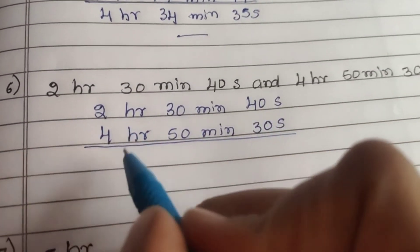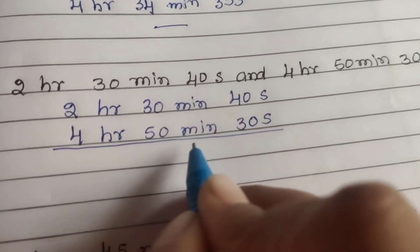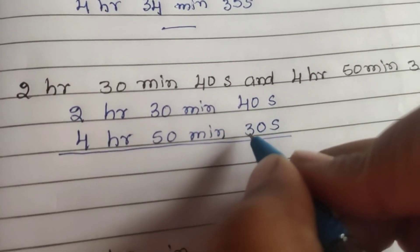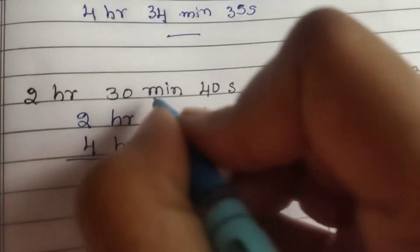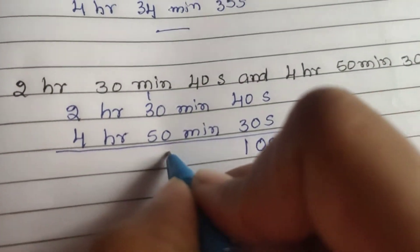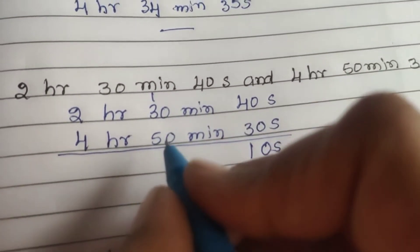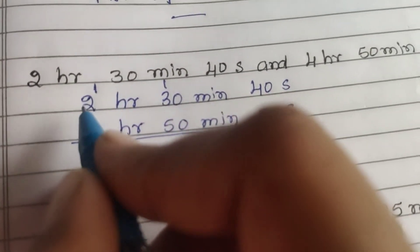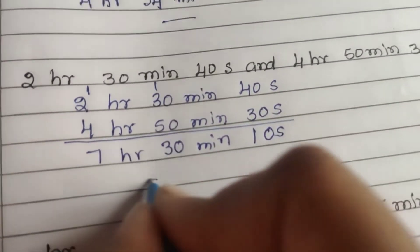6th question: 4 hours 30 minutes 40 seconds and 4 hours 50 minutes 30 seconds. 0 plus 0 is 0, 4 plus 3 is 7 — 7 minus 6 is 1, so 10 seconds, carry 1. 0 plus 0 is 0, 1 plus 3 is 4, 4 plus 5 is 9 — 9 minus 6 is 3, so 30 minutes, carry 1. 1 plus 2 is 3, 3 plus 4 is 7. The answer is 7 hours 30 minutes 10 seconds.